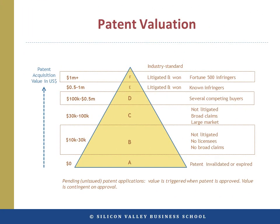A patent is a right to exclude others from practicing the claims of the invention disclosed in the patent. It provides the right to ask the court to force infringers to pay a reasonable royalty and/or issue an injunction preventing future infringement. So the marketability and value of the patent depends on its infringement status. The technology is a different asset to the patent, although the two can be related.